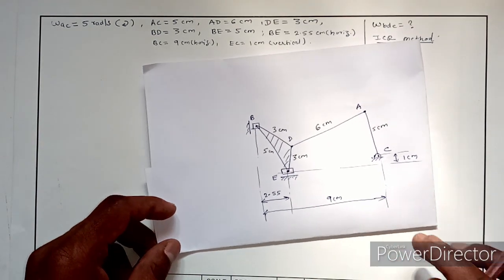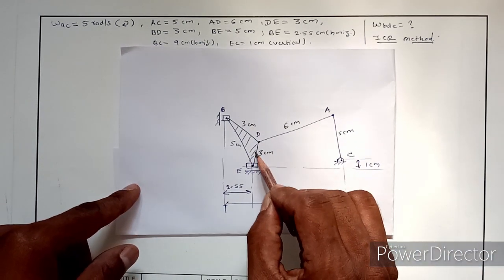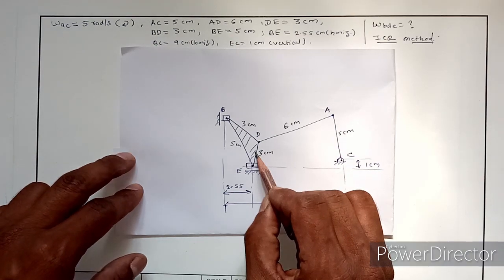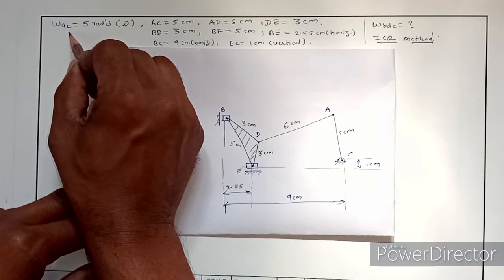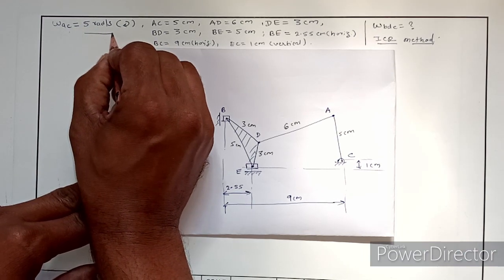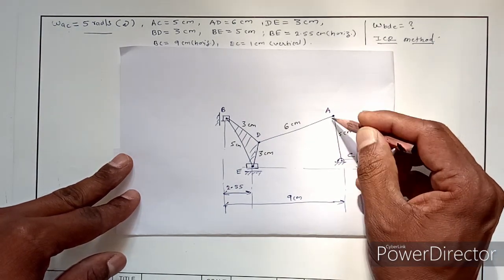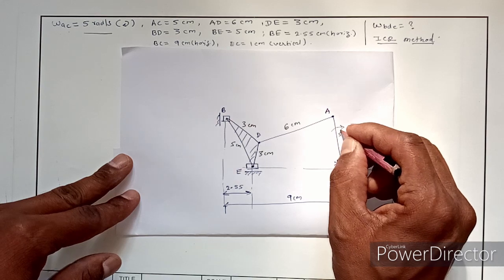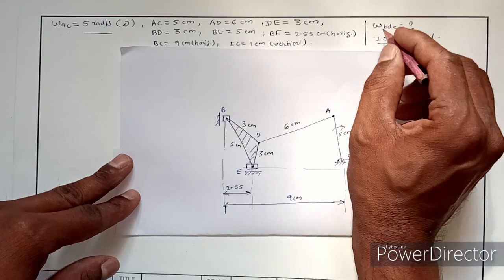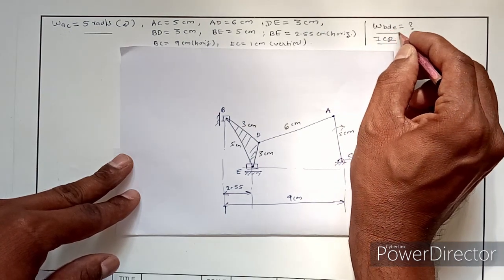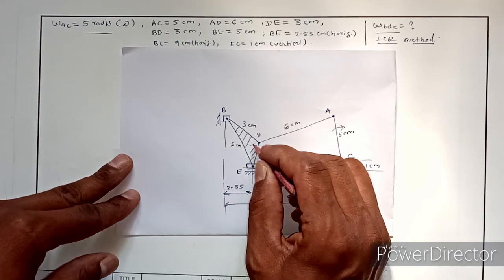Today we will solve one more numerical. This is the problem statement — the given mechanism with all dimensions. The angular velocity of link AC is given as 5 radians per second in the clockwise direction. You have to determine the angular velocity of the ternary link BDE.